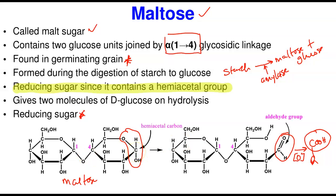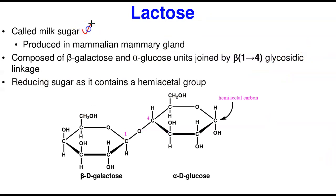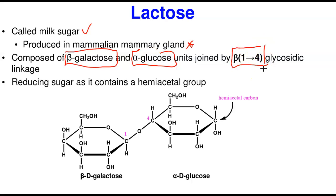Next is lactose, otherwise called milk sugar. It is produced in the mammalian mammary gland and is an important source of the first food for infant mammals. It is made up of beta-D-galactose and alpha-D-glucose joined together by a beta-1,4 glycosidic linkage. It is a reducing sugar because it contains a hemiacetal carbon — the hemiacetal group is still present after the first one has been used in the bond.